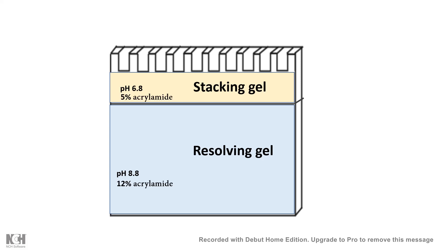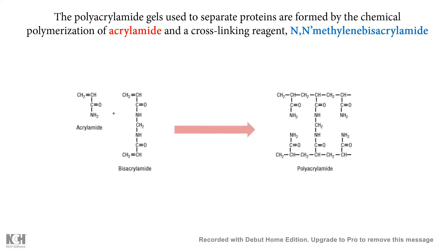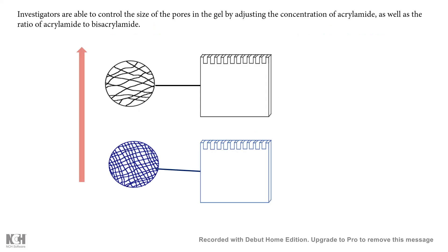The percentage of these gels is also very different. The percentage of resolving gel varies across usage — different percentages of resolving gel have different pore sizes, which allows proper separation of samples. Generally, the stacking gel has larger pores and lower ionic strength, whereas the resolving gel has smaller pores and higher ionic strength. The polyacrylamide gel is made up of two components: acrylamide and bisacrylamide, which polymerize to form the gel structure.